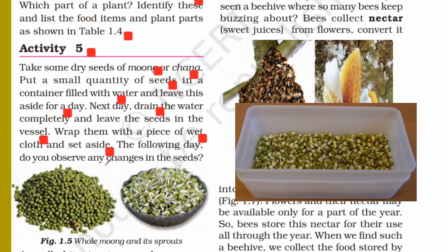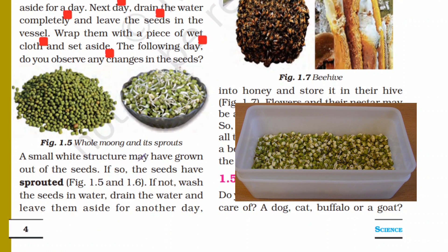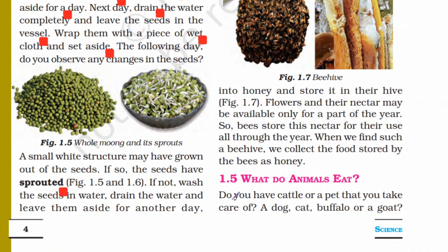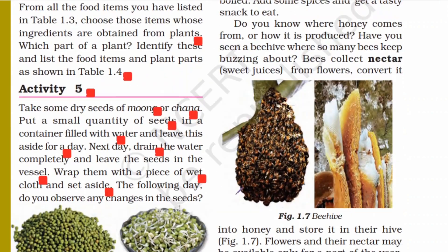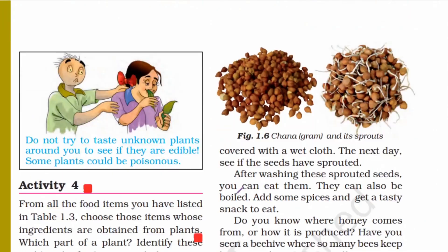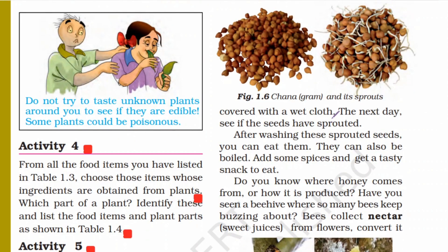The following day, you will observe some changes in the seeds. Some white structures may have grown out of the seeds — your seeds have sprouted! If your seeds haven't sprouted completely, wash the seeds in water, drain the water, and leave them aside for another day covered with a wet cloth. The next day, you will see the seeds have sprouted. After washing these sprouted seeds, you can eat them.